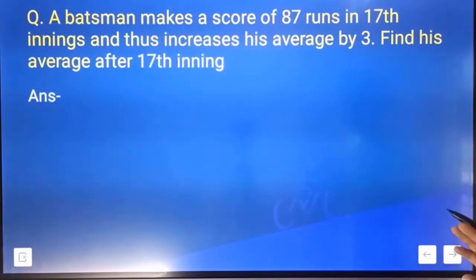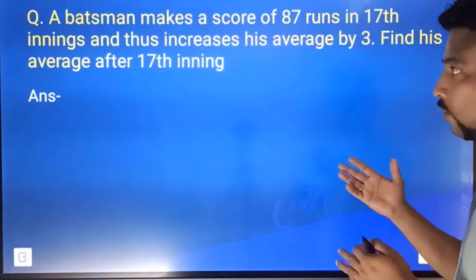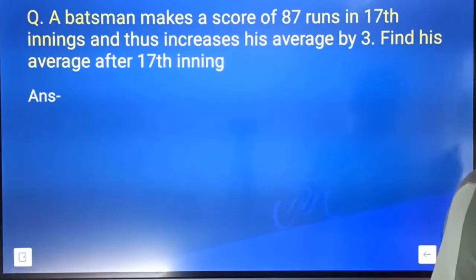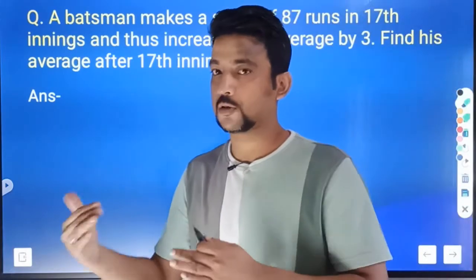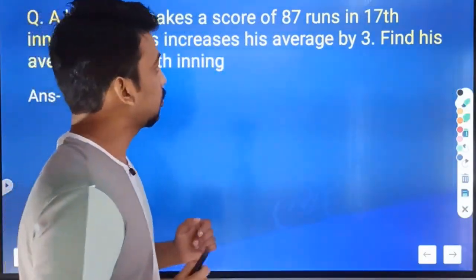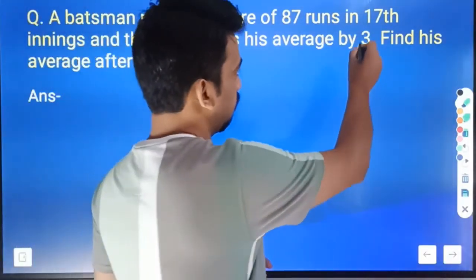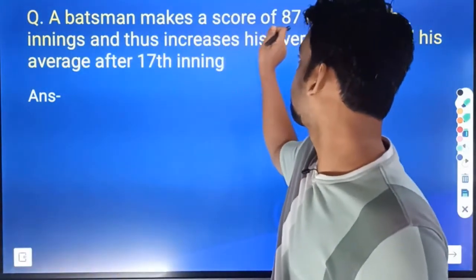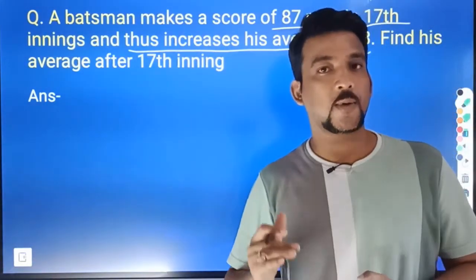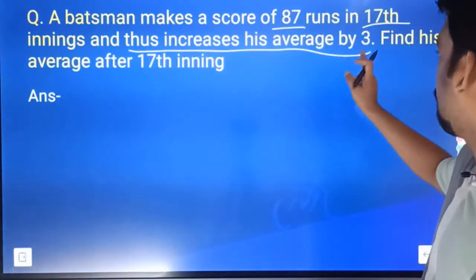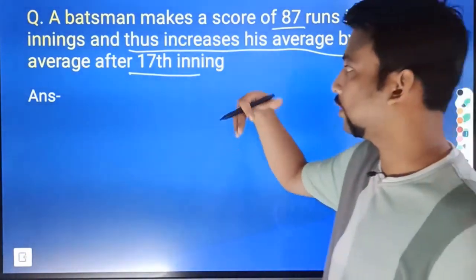Next type to the test. If you look at the same type, you will find the problem. The best man makes a score of 87 runs in the 17th innings, thus increasing his average by 3. Find his average after the 17th innings.